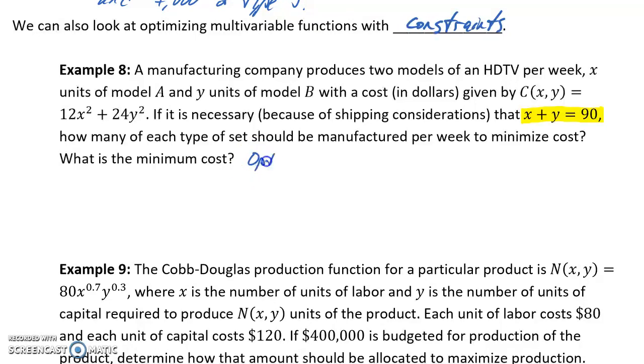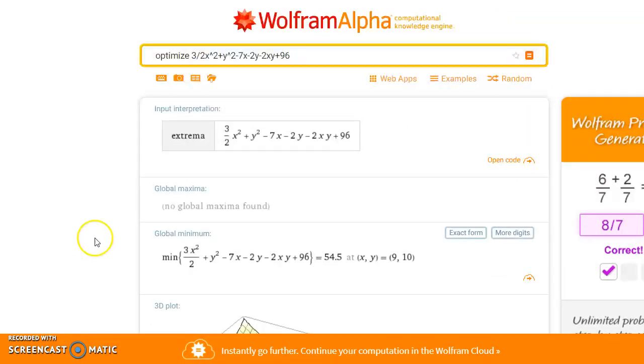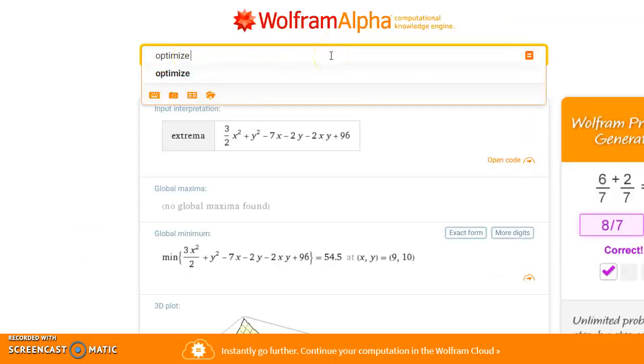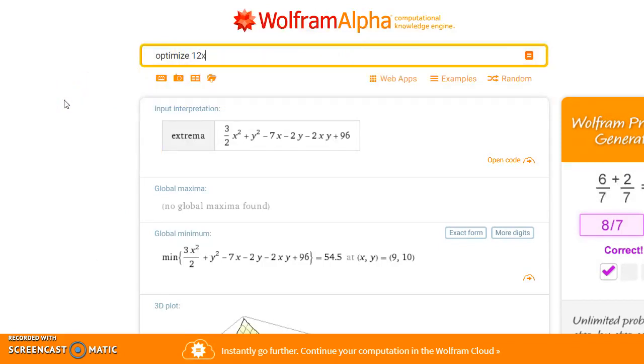So in this case, what we're looking to do is to optimize our given cost function C(x,y). And what we'll be looking to do is minimize that with this given constraint, such that x plus y, so the total number of TVs produced, of each type has to equal 90. So in Wolfram Alpha, we'll start off similarly as we would have in the last two examples. We want to optimize 12x² + 24y² such that x + y is equal to 90. So we're just adding this additional statement, or this additional constraint.